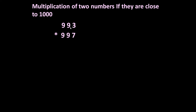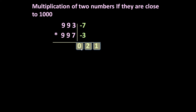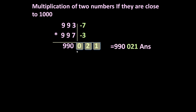Now let us solve problems where both numbers are less than 1000: 993 multiplied by 997. It is 7 short of 1000 and 3 short of 1000, so let us write minus 7 and minus 3. For the last three digits, we multiply 7 and 3 to get 21, but we need three digits so we write 021. For the first digits, cross addition: 997 minus 7 is 990, or 993 minus 3 is 990. So the answer is 990 021.